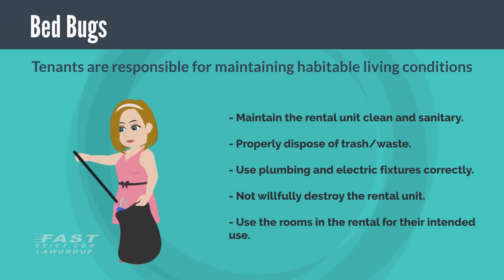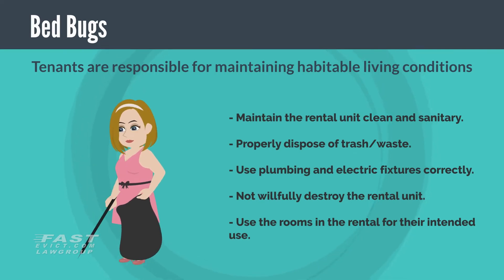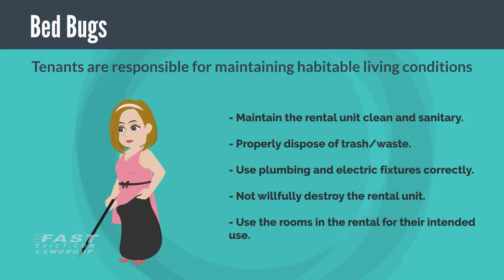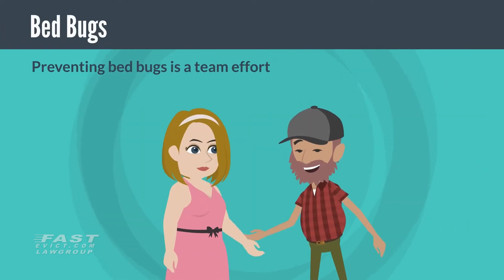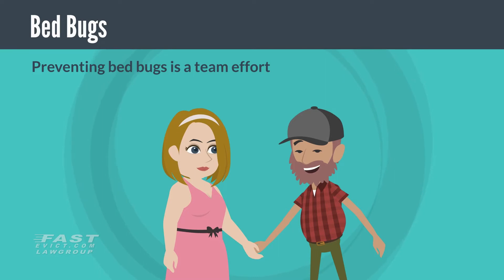Tenant Responsibilities: Tenants are also required to keep the premises in habitable conditions under state law Civil Code 1941.2. This includes maintaining the rental unit clean and sanitary, properly disposing of trash and waste, using plumbing and electric fixtures correctly, not willfully destroying the rental unit, and using the rooms in the rental for their intended use. Preventing bed bugs is a team effort — tenants should report any suspicions of bed bugs to their landlord so that the landlord can quickly solve the issue.